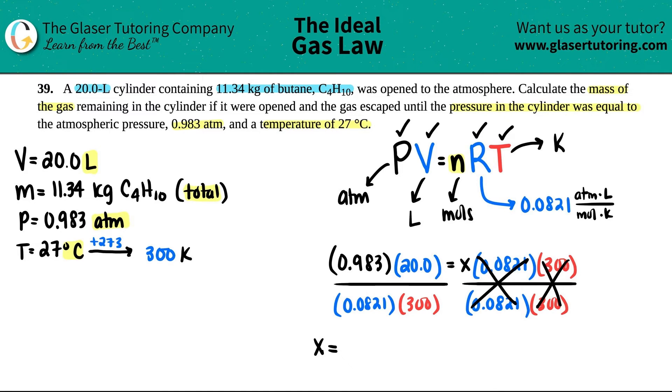And now we are with X. So let's see. 0.983 times 20 divided by 0.0821 divided by 300. And I'm looking back, looks like three sig figs. So we'll do 0.798. At this point, I mean, who really cares about sig figs, right? And that's moles of, who was this? This was butane, C4H10.